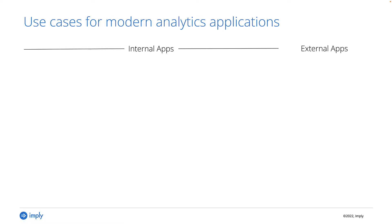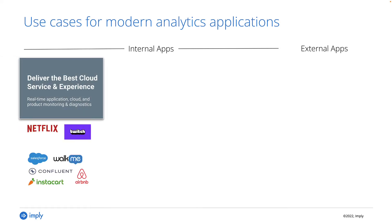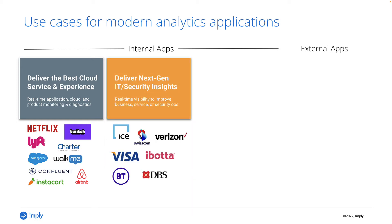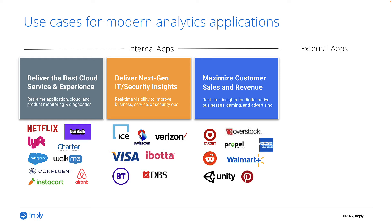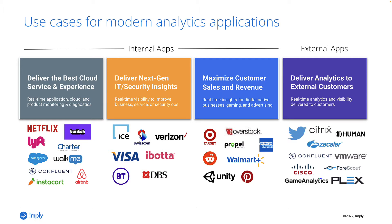I mentioned that analytics apps are built for specific, proprietary purposes. What might some of those be? I like to think of two major use cases: preventing problems and generating revenue. This equates roughly to internal and external use cases. One major category of internal analytics apps helps deliver the best cloud experience and service — here are a few companies doing that today, led by Netflix. Other internal apps alert us to IT or security issues like fraud. Still other internal apps make sure that user behavior is optimized so we maximize our chances for revenue and retention. Where things get more interesting is with external applications — basically selling data back to customers in the form of analytics, whether it is advertising effectiveness data with Twitter or usage data with Atlassian.